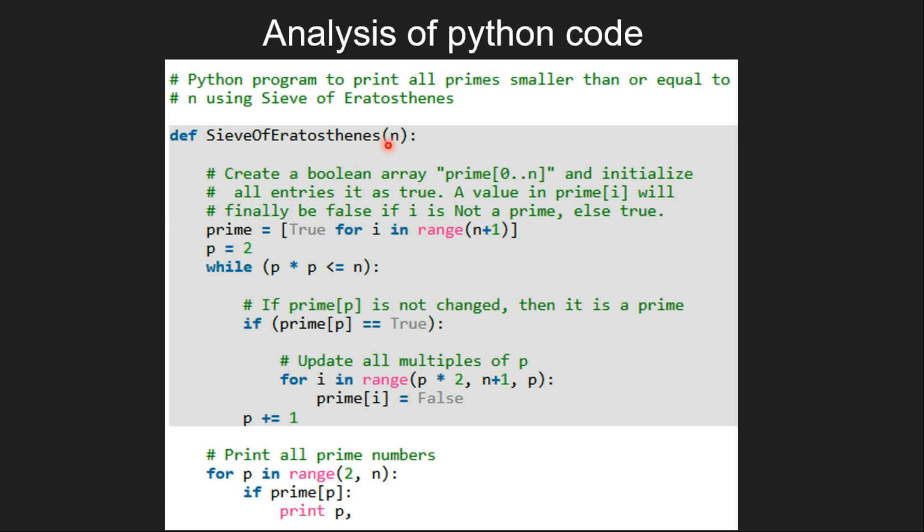first we need to create a boolean array and initialize all entries as true. If any of the numbers between 1 to n is not a prime number,